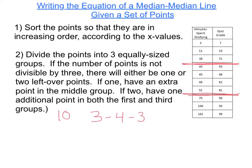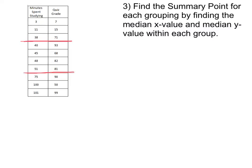The next step is to find a summary point for each of the groups by finding the median x-value and the median y-value within each group. For this group, the x's are already kind of laid out for us because we had already organized our data with the x's increasing, so it's just the middle number.